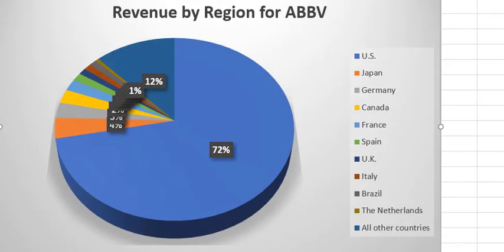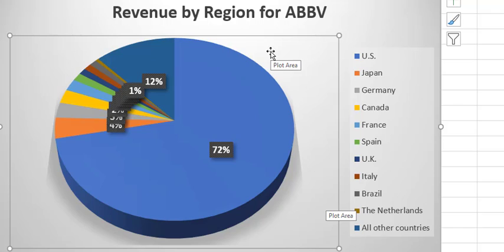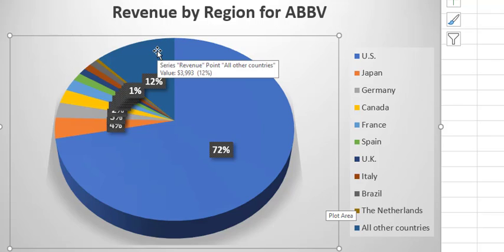In terms of their revenue by geographical area, they are heavily concentrated in the U.S., with 72% of their revenues coming from the U.S. The remaining 28% comes from a variety of countries: Japan, Germany, Canada, France, Spain, the U.K., and about 12% from all other countries, so there are likely many different countries in that group.